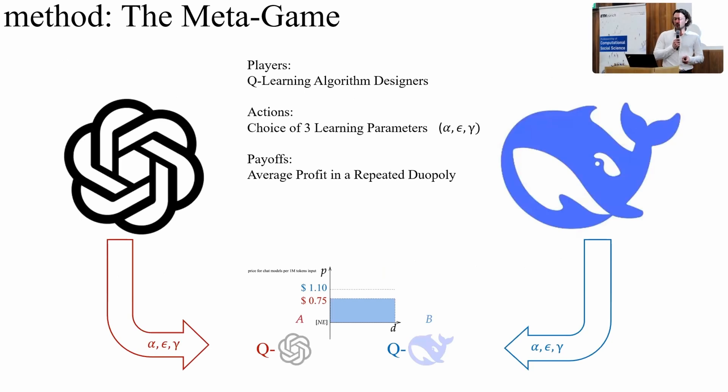And so to analyze this further, we set up what we call the metagame, which is a shift in perspective to considering the case where it's not these algorithms competing. It is the algorithm designers competing. The players of the metagame are the Q-learning algorithm designers, so OpenAI and DeepSeek. And what they do is they pick some learning parameters. They parameterize their learner with alpha, epsilon, and gamma, which to a machine learning crowd would be the hyperparameters. So they're not the weights, they're not the beliefs that are learned in the course of learning, it's what determines how an agent learns. And the payoff for these players will be the average profit in the repeated duopoly. So they play a duopoly for many thousands of steps against the opponent, parameterized in a particular way. And the average of their profits over time is what we use to determine their payoff.